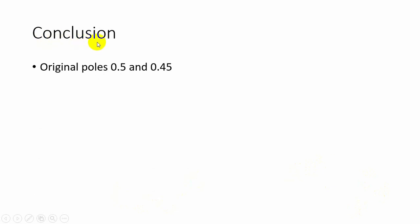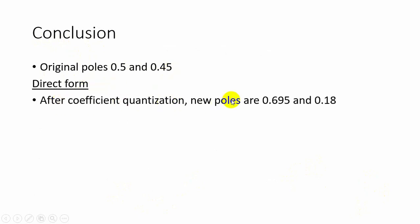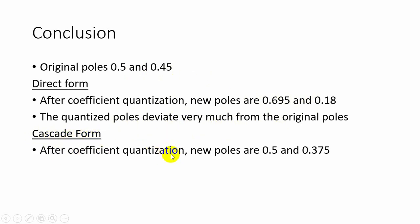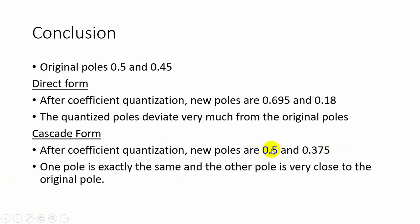From this example we can conclude that the original poles are 0.5 and 0.45. In direct form, after coefficient quantization, the new poles are 0.695 and 0.18. Comparing the original poles with the new poles, the quantized poles deviate very much from the original poles. But in cascade form realization, after coefficient quantization, the new poles are 0.5 and 0.375 — one pole is exactly the same as the original and the other is very close to it. So we can prefer cascade form realization over direct form realization when performing coefficient quantization.